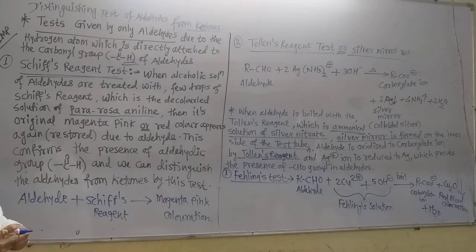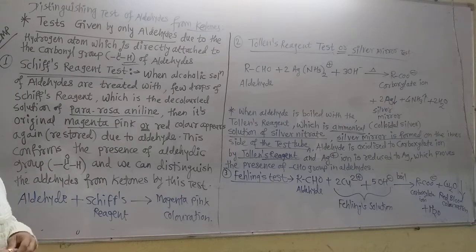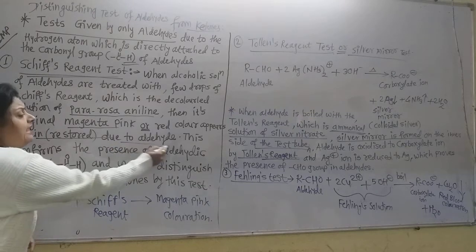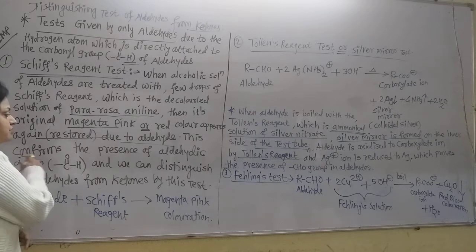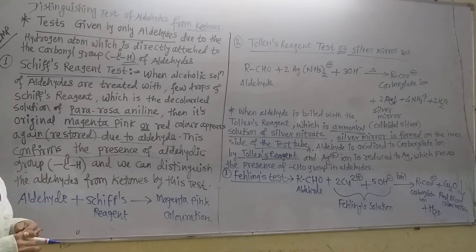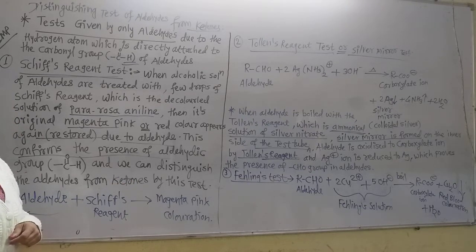When the color appears again, that confirms the given substance is the aldehyde, because the aldehyde reduces the decolorized para-rosaniline solution and gives back its original color. When an alcoholic solution of the aldehyde is treated with a few drops of Schiff's reagent, the magenta-pink — that is red — color is restored due to the aldehyde group's hydrogen directly attached, confirming the presence of the aldehyde group. Aldehyde + Schiff's reagent gives magenta-pink color.